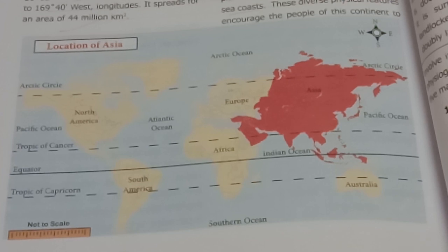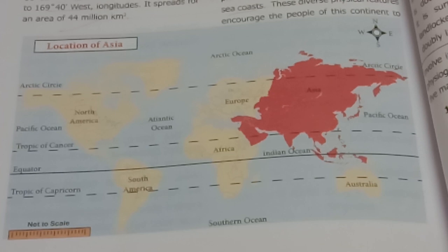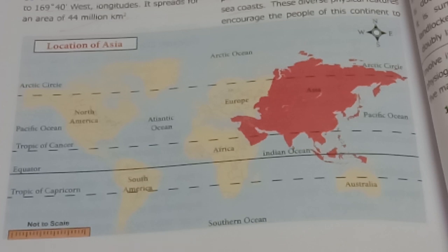The Asia continent extends from 10 degrees 11 south to 81 degrees north. On the east side there is 26 degrees 2 east, and on the west side 169 degrees 40. It spreads for an area of 44 million kilometers square.